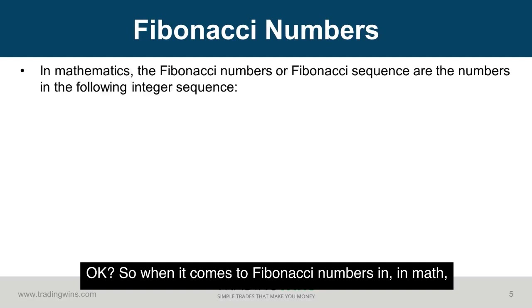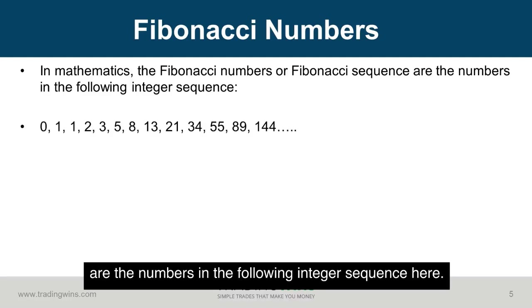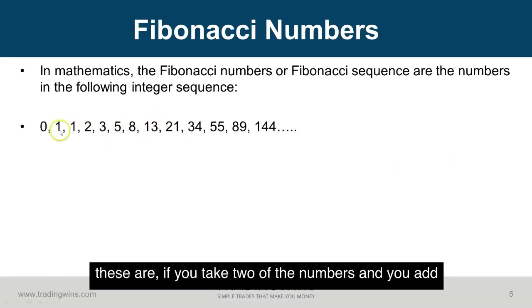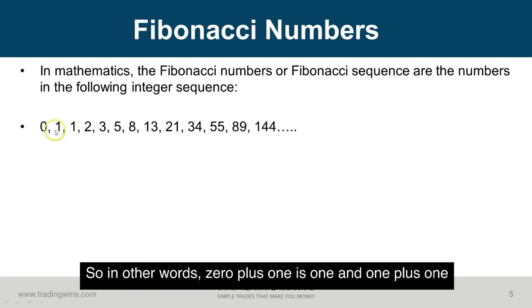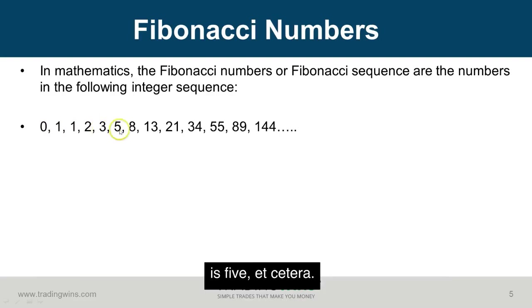When it comes to Fibonacci numbers in math, the Fibonacci sequence is the numbers in the following integer sequence. An easy way to understand these is: take two of the numbers and add them together to get the next one. So zero plus one is one, one plus one is two, one plus two is three, two plus three is five, and so on.